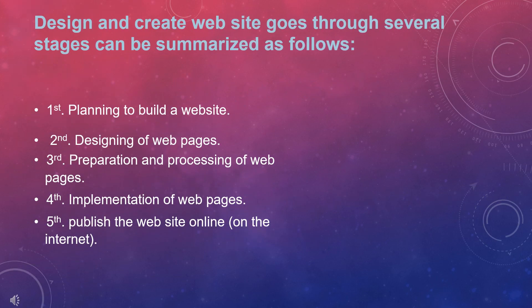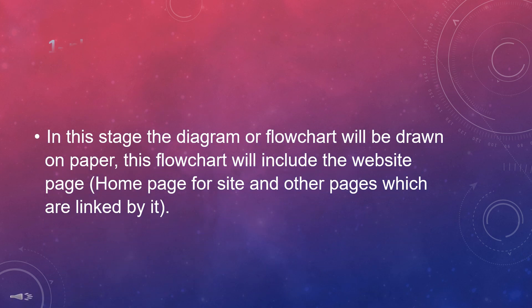To design and create a website goes through several stages, summarized as follows: first, planning to build a website; second, designing of web pages; third, preparation and processing of web pages; fourth, implementation of web pages; fifth, publishing the website online on the internet.